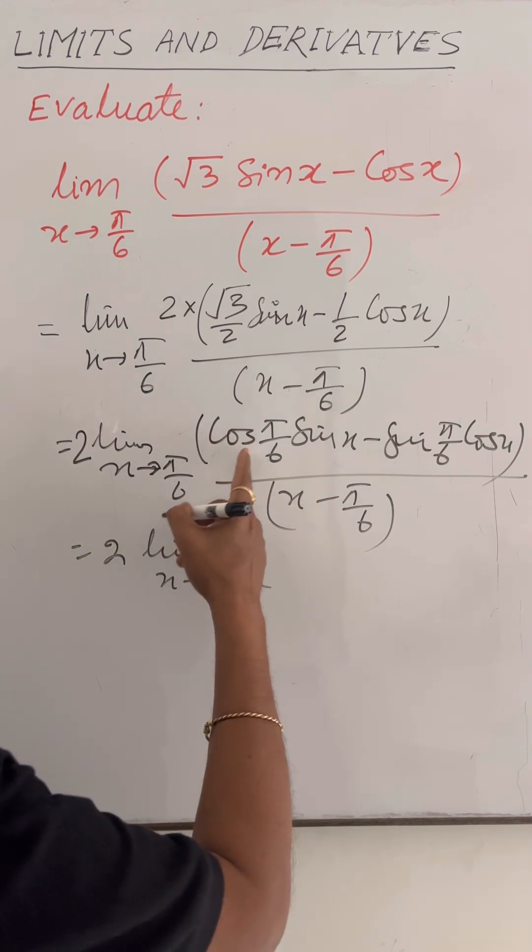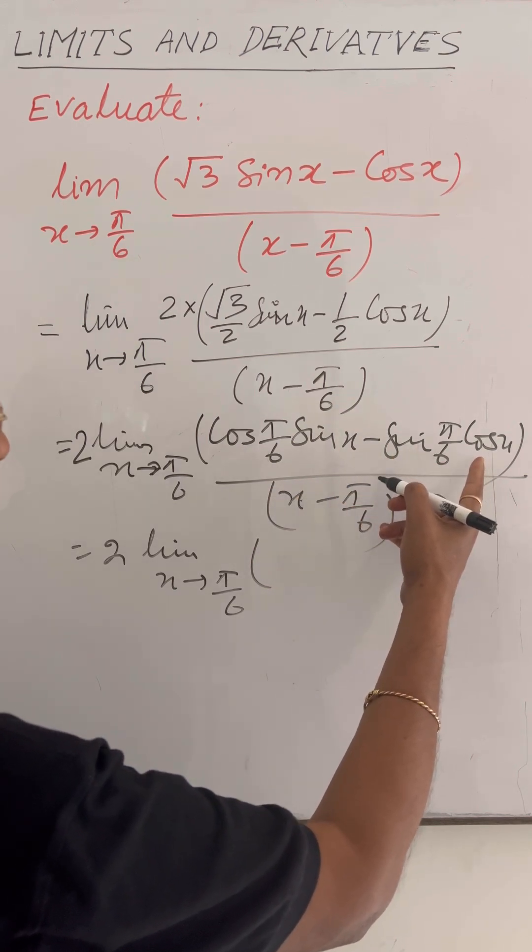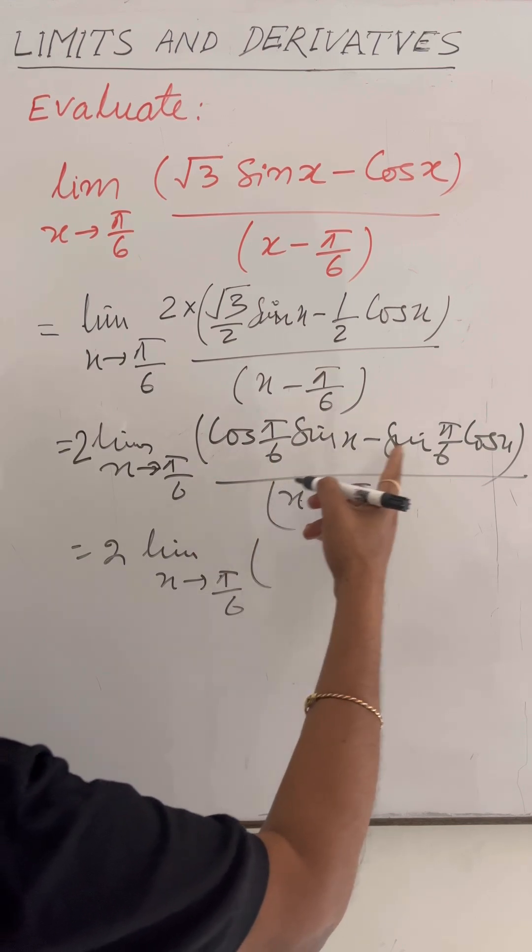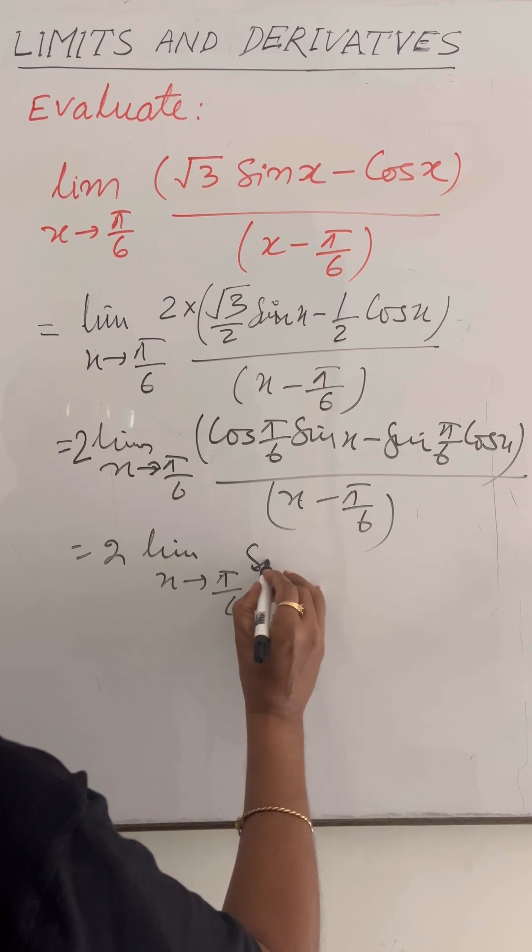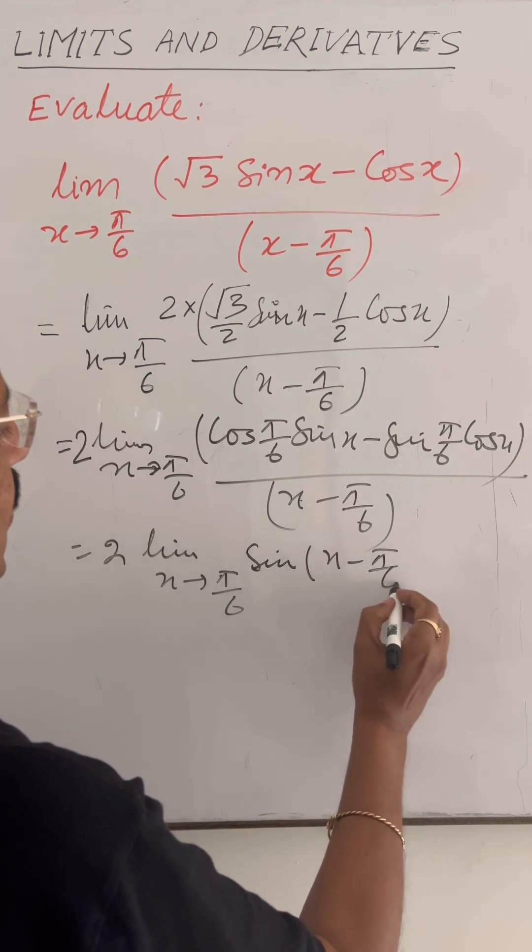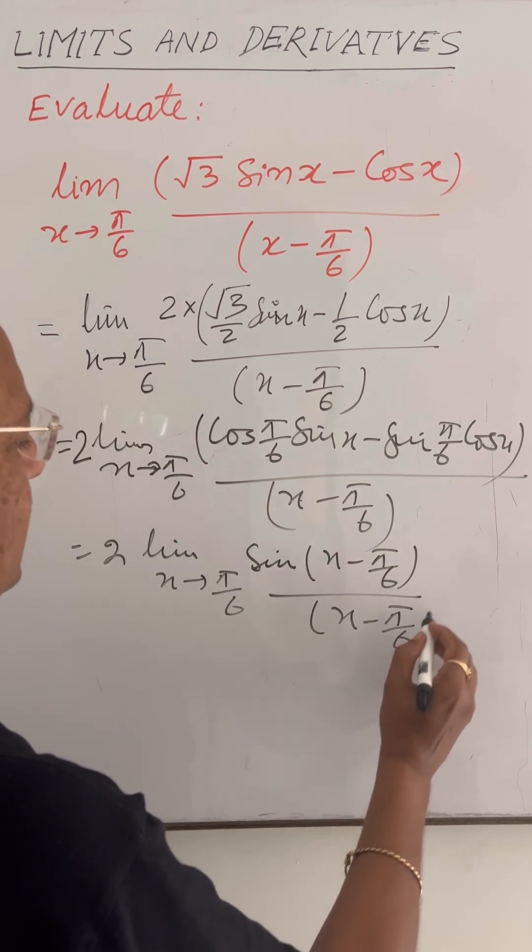Here cos π by 6 into sin x minus sin π by 6 into cos x is in the form of sin a into cos b minus cos a into sin b, which is sin of a minus b. So this is sin of x minus π by 6 upon denominator x minus π by 6.